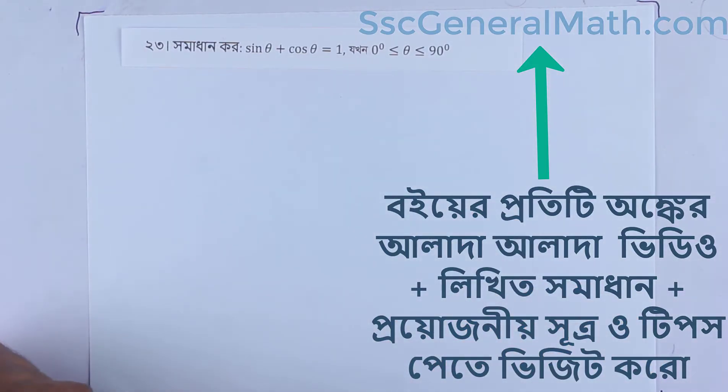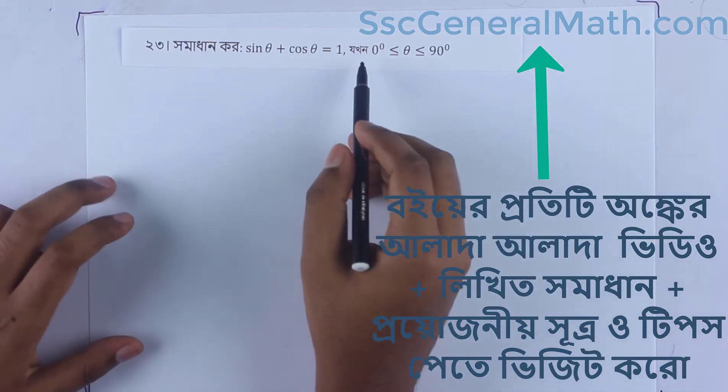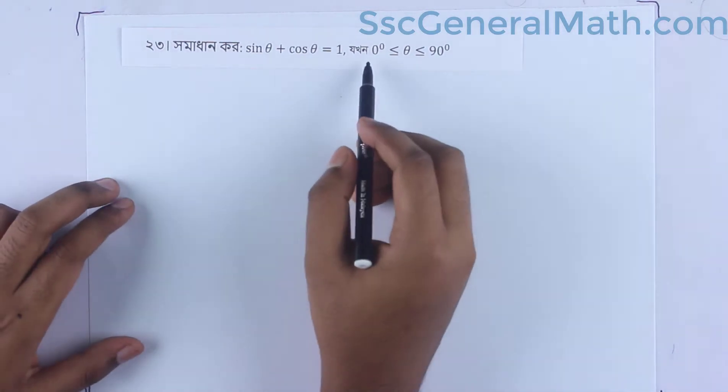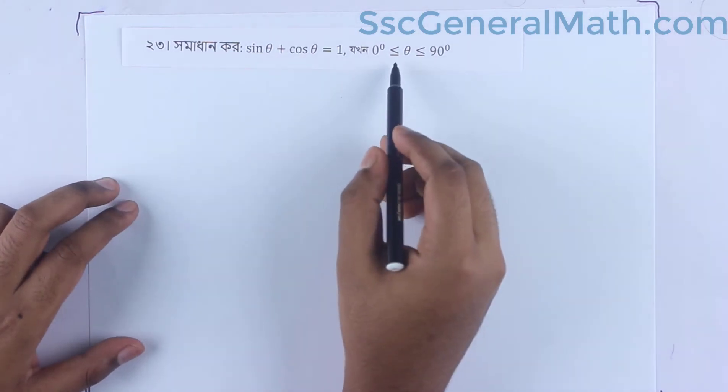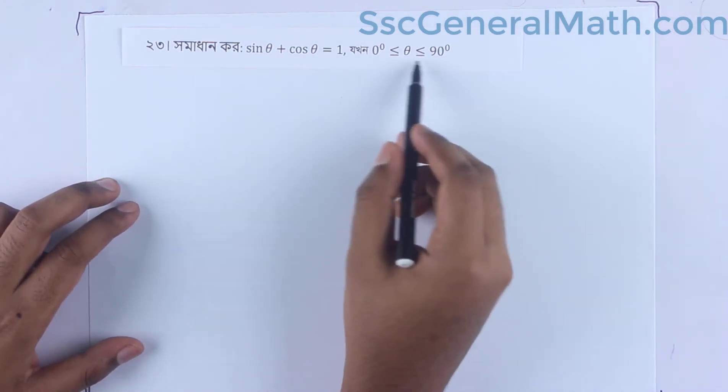The question is: sin theta plus cos theta equals 1, and theta will be 0 or 90 degrees.